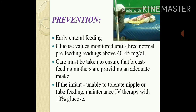For prevention, early enteral feeding should be started and glucose values should be monitored until three consecutive normal pre-feeding readings above 40 to 45 mg per deciliter are obtained. Care must be taken to ensure that breastfeeding mothers are providing adequate breast milk intake. If the infant is unable to tolerate nipple or tube feeding, then intravenous therapy with 10% glucose must be initiated to maintain the newborn hemodynamically stable.